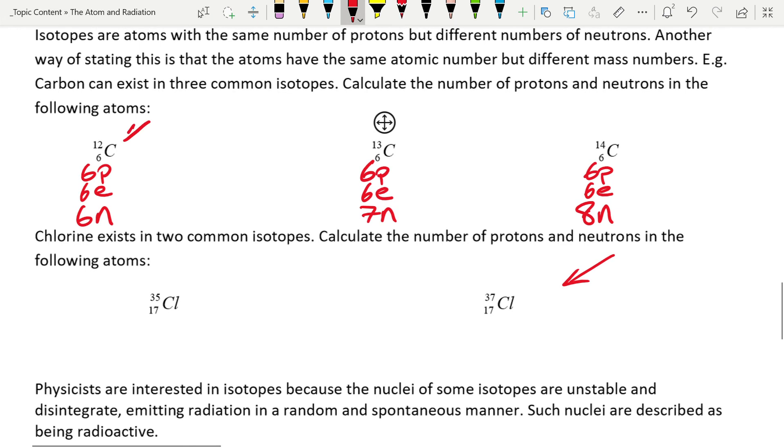We would call this one here carbon-12, and it is stable. By that we just mean it will never change from what it is—it will always stay as carbon. However, carbon-13 is unstable and carbon-14 is unstable.